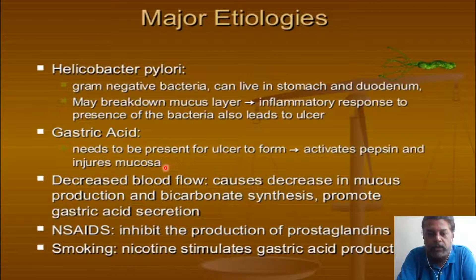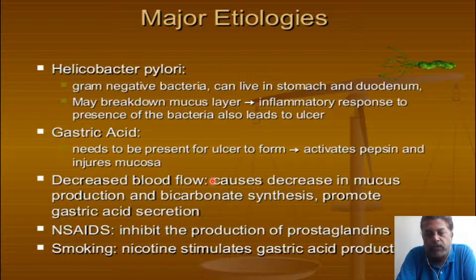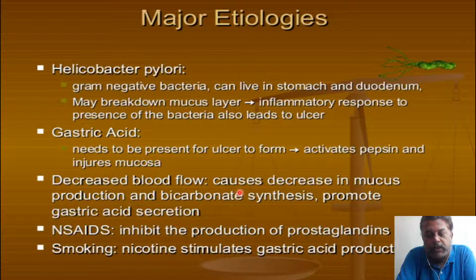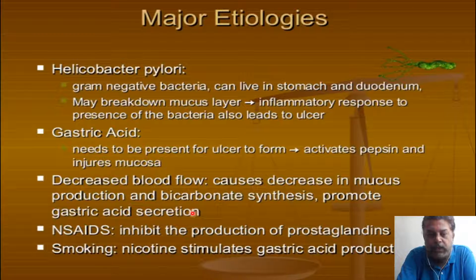Decreased blood flow, because of many causes, will cause a decrease in mucus production, bicarbonate synthesis, and decreased nitric oxide synthesis, and hence promotes gastric acid secretion and ulcers.